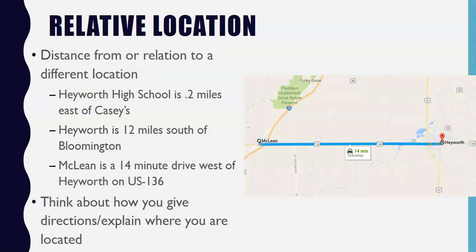For instance, Hayworth High School is two-tenths of a mile east of Casey's, or Hayworth is 12 miles south of Bloomington, or McLean is a 14-minute drive west of Hayworth on US 136. If I was telling you how to get to ISU from Hayworth, I would say drive west on Cleveland Avenue or 136, take the on-ramp to northbound US 51, and drive north on US 51 until you see ISU's campus. When we think about relative location, we want to think about how you would give directions or explain where you're located.